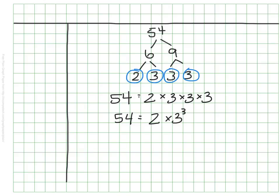How'd you do? I found that 54 was the product of 2 times 3 times 3 times 3, but since there were 3 threes, the number 3 was getting used 3 times, I simplified that to be 2 times 3 to the power of 3. Hopefully you got the same thing I did.